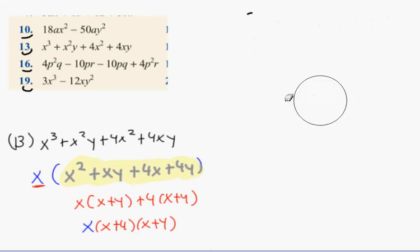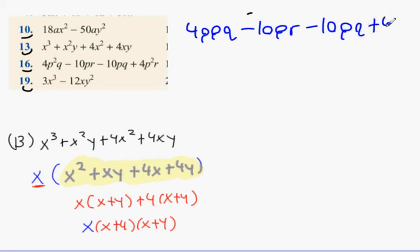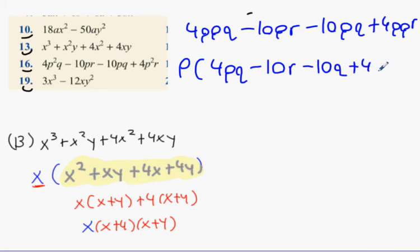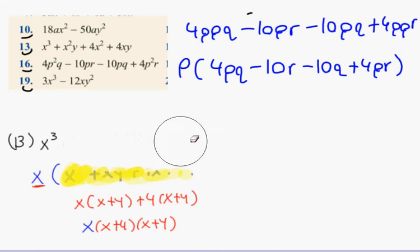In the same way, question 16 seems to be doing something very similar. It's 4PQ minus 10PR minus 10PQ plus 4PPR. What letter is in every single one of them? P. Perfect. So take out P and we're left with 4PQ minus 10R minus 10Q plus 4PR.